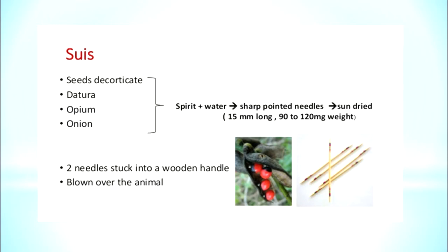An important aspect of misuse: needles or 'suis' in Indian terms are made from these seeds. The seeds are decocted — crushed and boiled down to extract their essence into water. This liquid is then mixed with dhatura, opium, and onion and made into a paste with water and spirit. Small sharp-pointed needles or suis, about 15 mm long and weighing 90 to 120 milligrams, are formed from this paste and sun-dried.